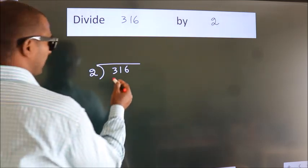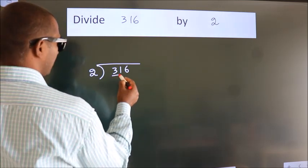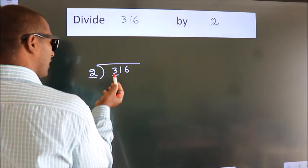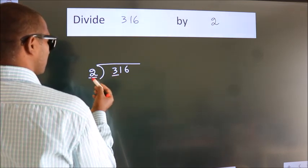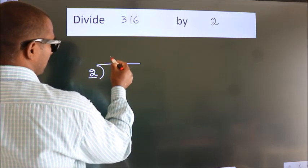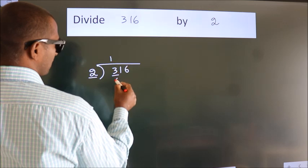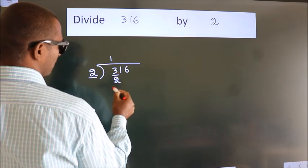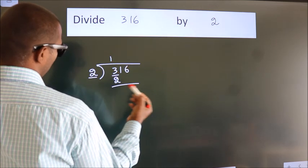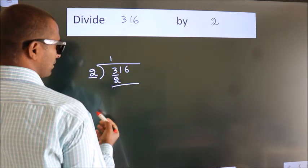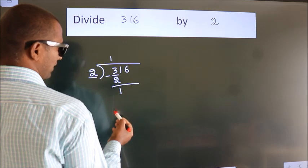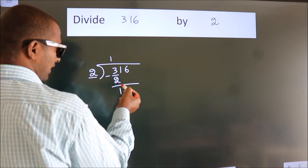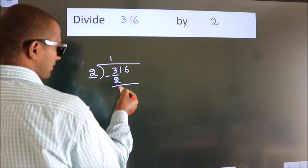Here we have 3, here 2. A number close to 3 in the 2 times table is 2 ones 2. Now we should subtract. We get 1.